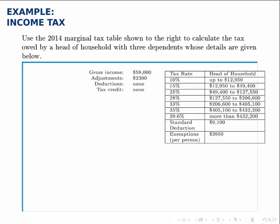Use the 2014 marginal tax table shown on the right to calculate the tax owed by a head of household with three dependents whose details are given below. We're given the gross income, the adjustments, and the fact that there are no itemized deductions and no tax credit for this head of household.